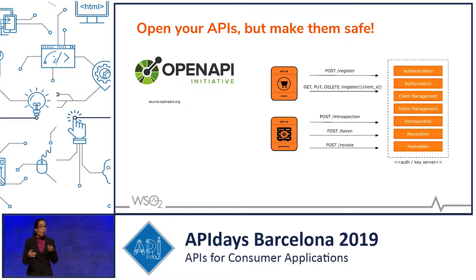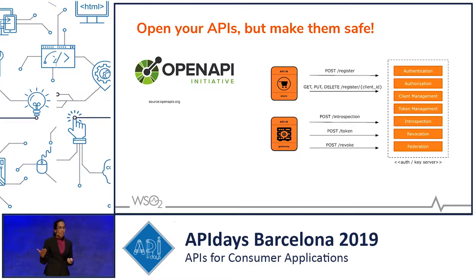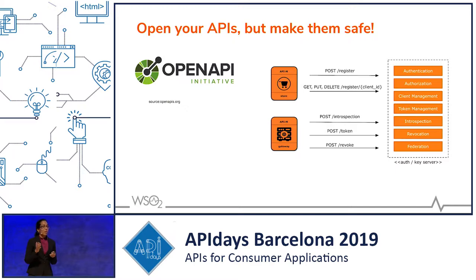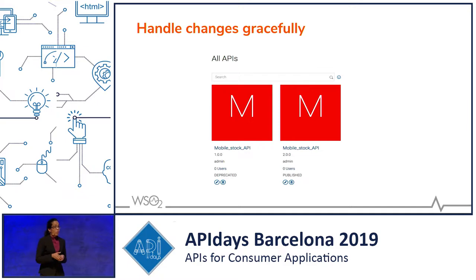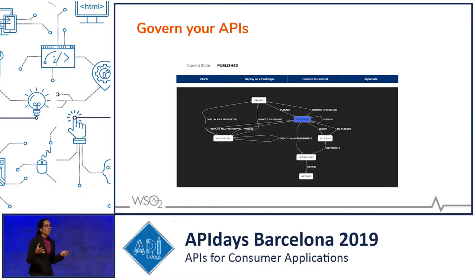If you're exposing your API, you need to make sure that it is only accessible by the intended party — this is about authorization. You can authorize based on user roles or different attributes. Authentication and authorization are key security mechanisms. You also need proper API version management: if you are working on new features or deprecating something, you need to maintain versions of your APIs, and this leads to governing your APIs with an API lifecycle.